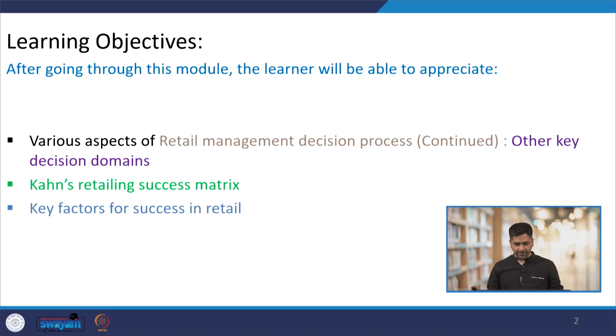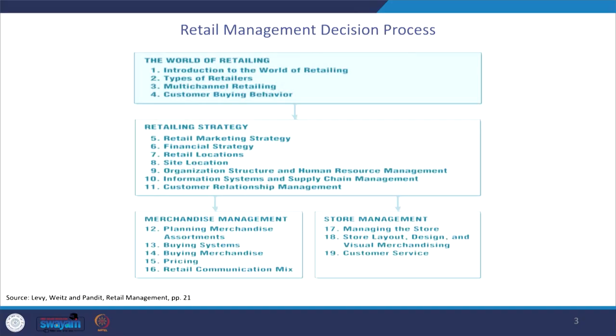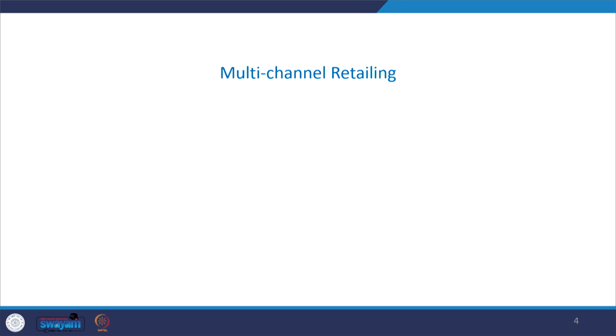As far as this week is concerned, we will be precisely completing the remaining facets of the Retail Management Decision Process, which is about other key decision domains as far as the success of a retailer or day-to-day operations are concerned. We will also be looking at Khan's Retailing Success Matrix and finally, the key factors for success in retail. Particularly in this module, we will be looking at facets of multi-channel retailing, consumer buying behaviour, and getting to store management as far as all important decision facets of retailing are concerned.